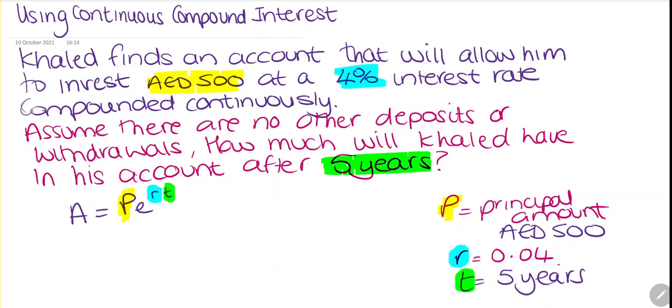Now we're going to substitute this in. So A — our principal amount is going to be 500 — multiplied by E raised to the power of RT. So we have 0.04 multiplied by five.